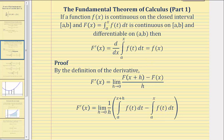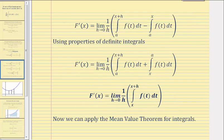Now we'll apply properties of definite integrals. If we change the order of integration, it's going to change the sign, which would make this plus the integral of f of t from x to a. Then using the additive property of definite integrals, the sum of these two integrals would be equal to the integral of f of t from x to the quantity x plus h.